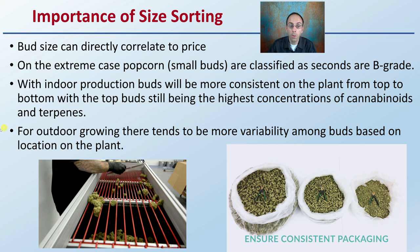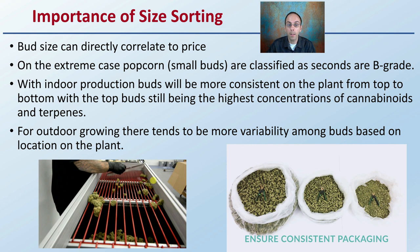For outdoor growing, there tends to be more variability among buds based on location on the plant, location within the field, how it might be shaded, or how other branches might be blocking it. But whether the starting product is consistent or inconsistent, sorting does allow a lot of consistency in your packaging.